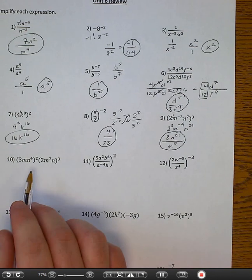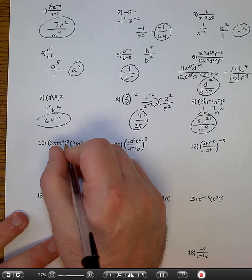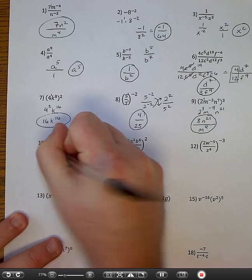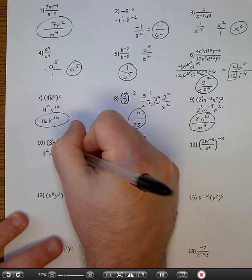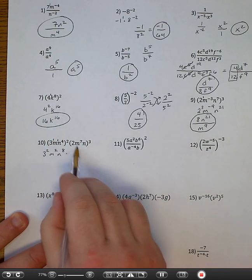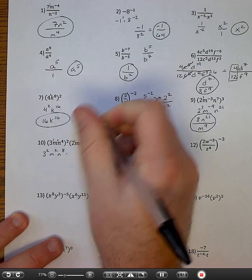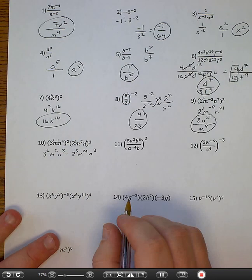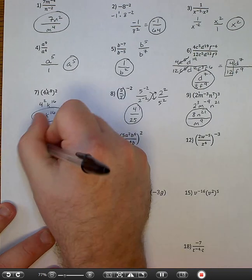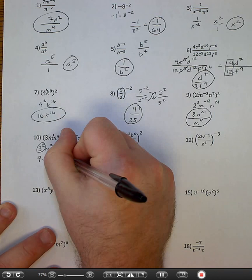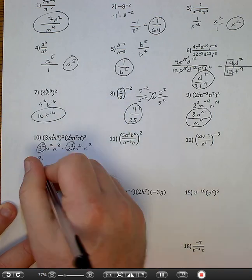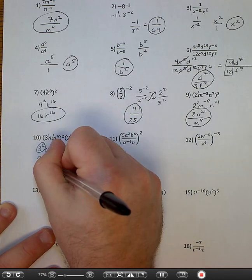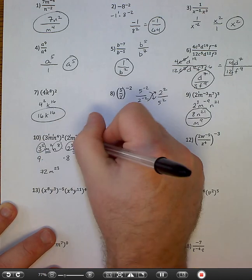Number ten. This two goes with everything in the first parentheses — there's a one here and a one here — so I'm going to have three squared, m squared, n to the eighth. The three on the outside goes with everything in the second set of parentheses — there's a one here and a one here — so I'm going to have two to the third, m to the twenty-first, n to the third. Now I'm just going to simplify: three squared is nine, two to the third is eight, nine times eight is seventy-two. I'm going to put m squared with m to the twenty-first and get m to the twenty-third. And n to the eighth and n to the third makes n to the eleventh.